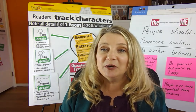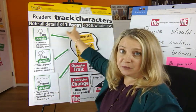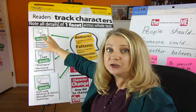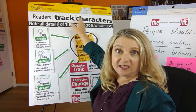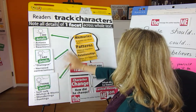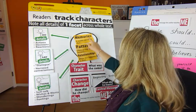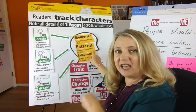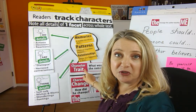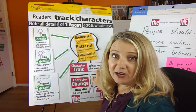Hello, it's Mrs. McCullough again and we're doing the last lesson in our series about how readers track characters. So far we've learned that you can note all the details like what the characters do, say, or think for just one facet across the whole entire text. When we note those details, we start to think about them with our thinking voice — we have memories, look for patterns and relationships, and use that to figure out the character's personality, otherwise known as the character's trait, and that stays the same all the way across the text.